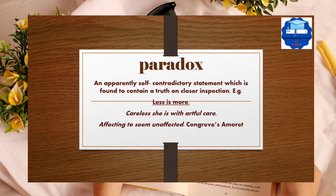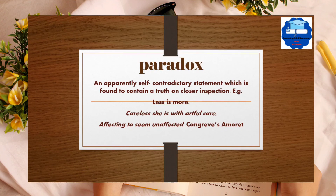Paradox is an apparently self-contradictory statement which is found to contain a truth upon closer inspection. For example: 'less is more.' In literature, Congreve has used this technique in Amoret: 'Careless she is with artful care, affecting to seem unaffected.' Paradox is a figure of speech in which a statement appears to contradict itself — a statement or group of sentences that contradict what we know while delivering an inherent truth.